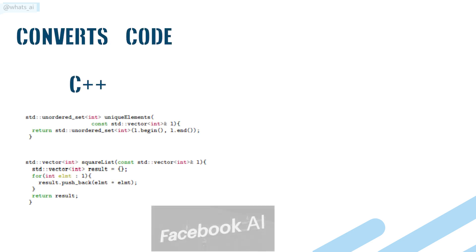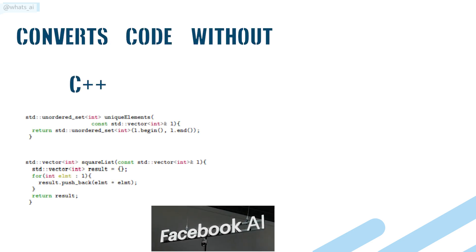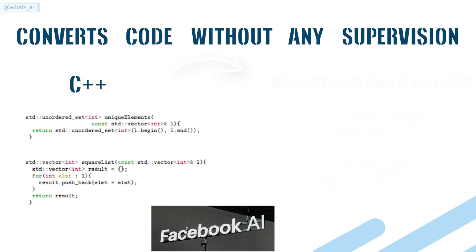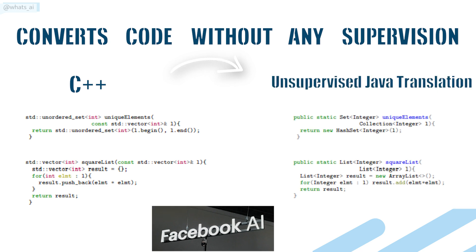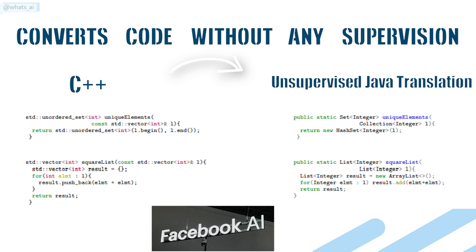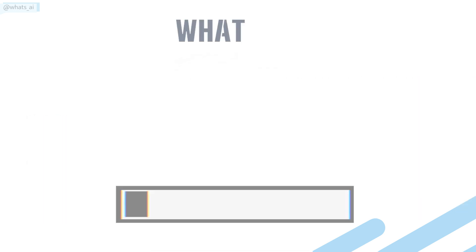This new model converts code from one programming language to another without any supervision. It can take a Python function and translate it into a C++ function and vice versa without any prior examples. It understands the syntax of each language and can thus generalize to any programming languages. Let's see how they did that.